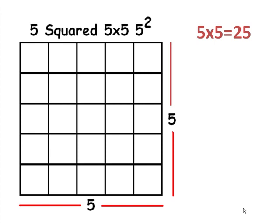5 squared, or 5 times 5, is 25. 25 squares shown here. The length of the larger square per side is 5. Square root of 25 equals 5.